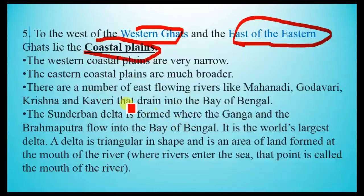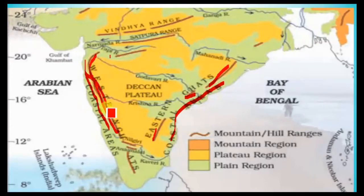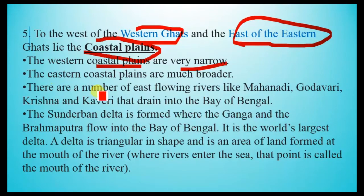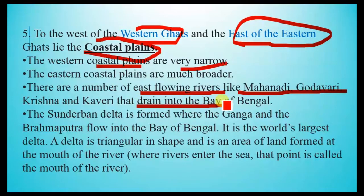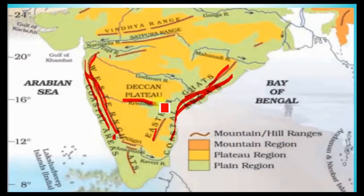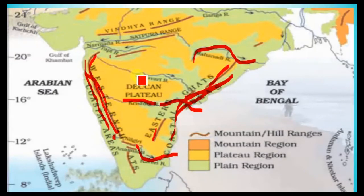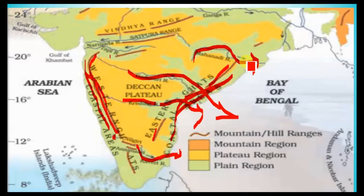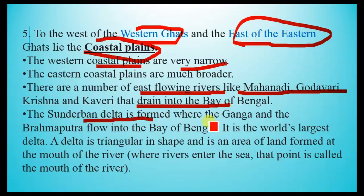The western coastal plain is very narrow, while the eastern coastal plain is much wider and more expansive. There are a number of east-flowing rivers — the Mahanadi, Godavari, Krishna, and Kaveri — that drain into the Bay of Bengal, making them eastward-flowing rivers.